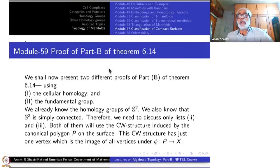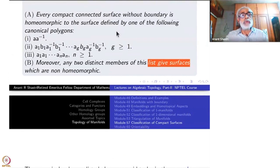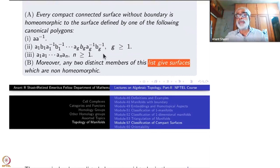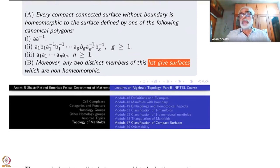Today we shall complete part B of Theorem 6.4. Recall that Theorem 6.4 gives three sequences, three categories of canonical polygons. The first one represents the sphere. The second and third are sequences — for each g or each a there is one. Part B says that any two distinct members belonging to any of these sets are in different homeomorphism classes. That is what we have to prove, and that will complete the proof of this theorem.